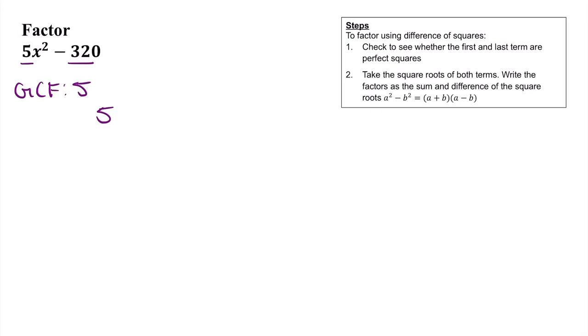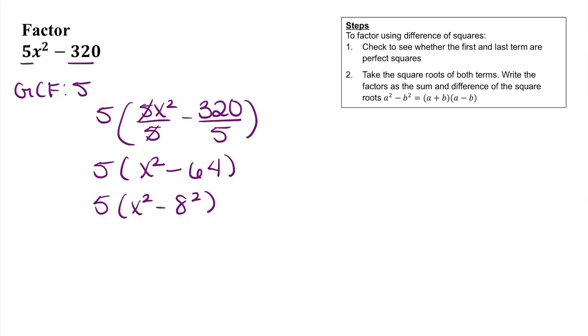I'm going to pull out that 5 and then divide both of these terms by 5. When I do that, I'm left with 5 times—5x² over 5 is x², and 320 over 5 is 64. Now you may see that we have a difference of squares. We can rewrite this as 5(x² - 8²). And so when we factor this, we're going to have 5(x + 8)(x - 8).